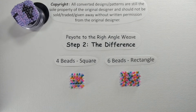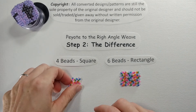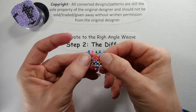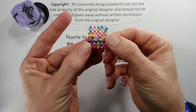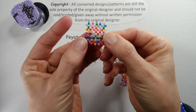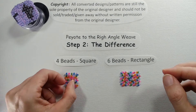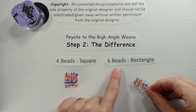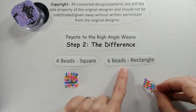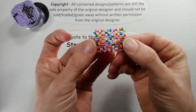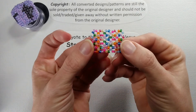With the regular flat right angle weave you use four beads and you make squares, as you can see in this piece here. But when you convert peyote to the right angle weave you'll want to use six beads and make rectangles, as I have done in this piece here.